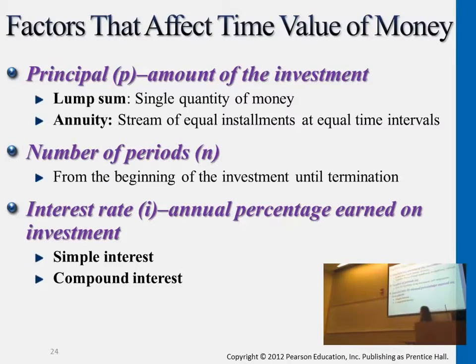The second factor is the interest rate — what is the current interest rate that we will be getting if we invest this money elsewhere? What is the return that we're getting? The percentage that we're earning from these returns on an annual basis.